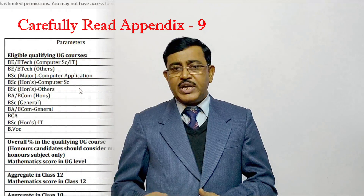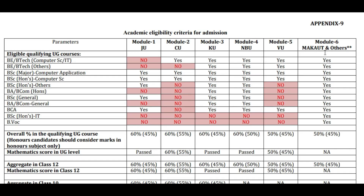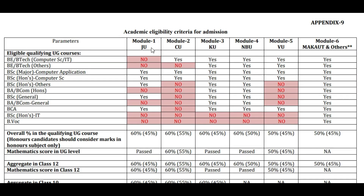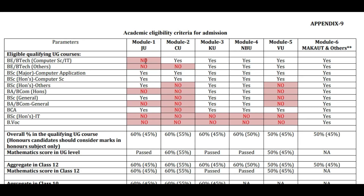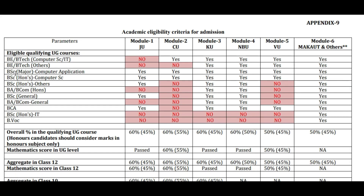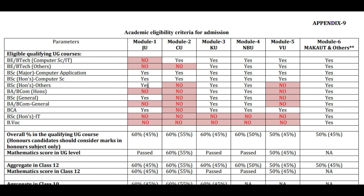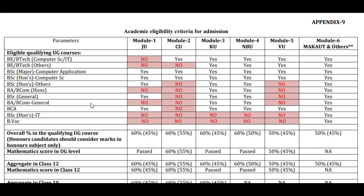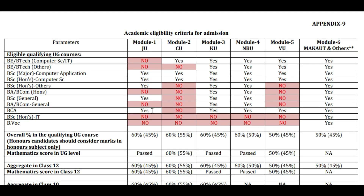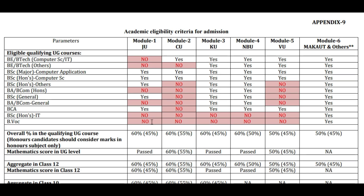Appendix 9 has Module 1, Module 2, Module 3, Module 4, Module 5, and Module 6. One of the modules is Jadavpur University. In Jadavpur University, you can apply with BSc, BE, or other qualifications. BSc major computer application is BSc. By the final semester, then apply. BSc honors computer science and BSc honors others are also eligible. BSc becomes honors, BSc honors, BSc general applies. BA becomes general applies. If you apply to BCA, you apply to BSc Honors IT or B-Tech as well.